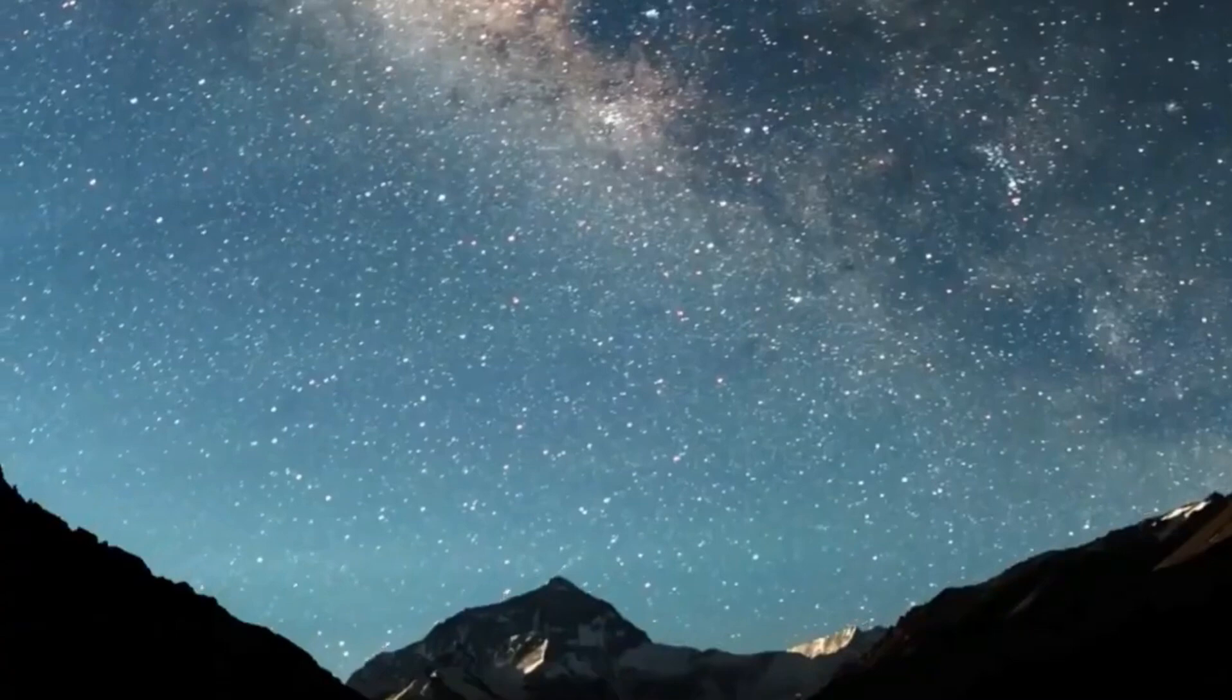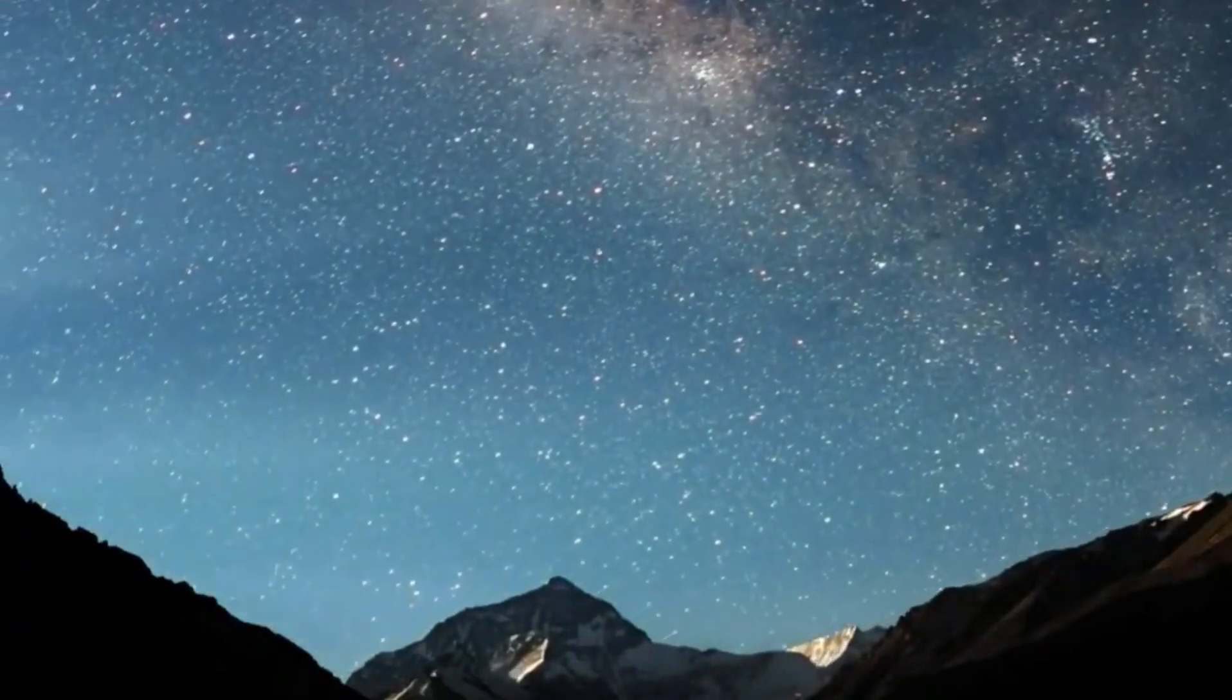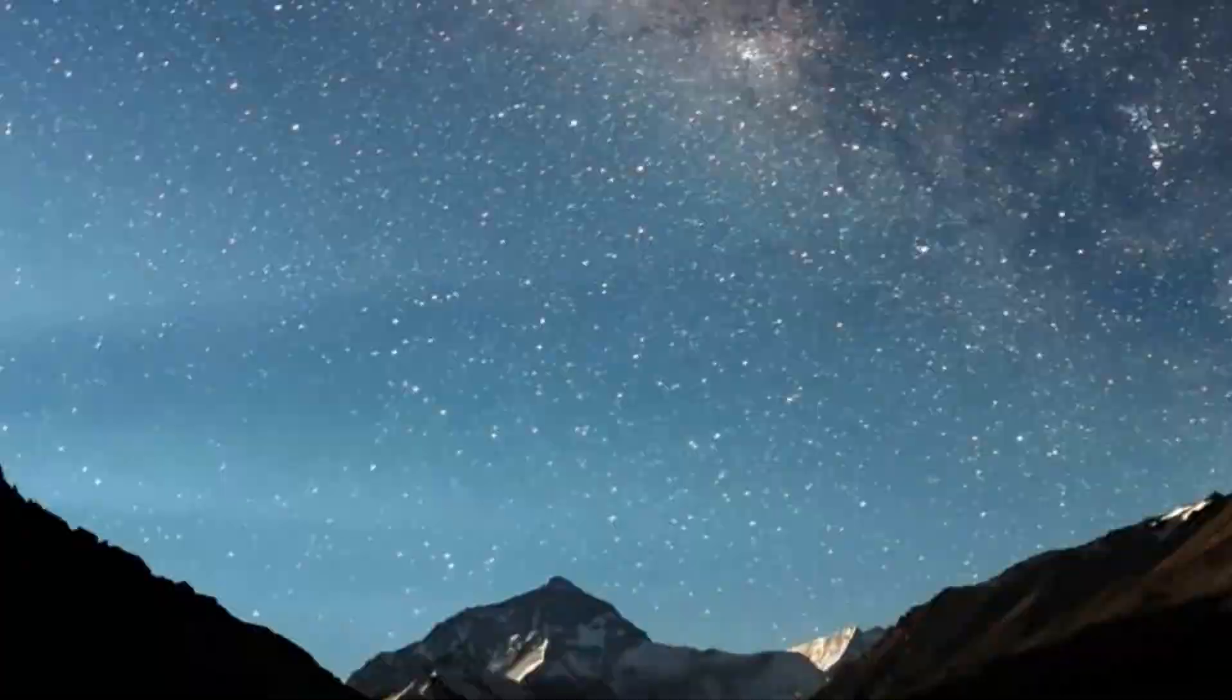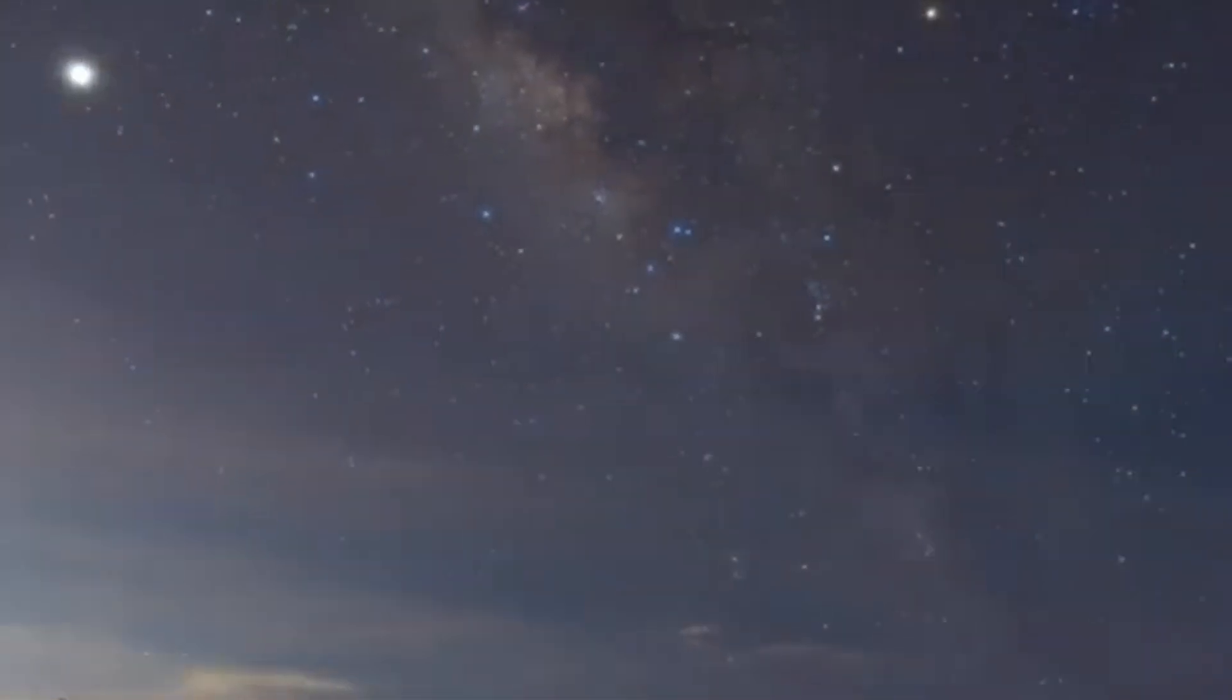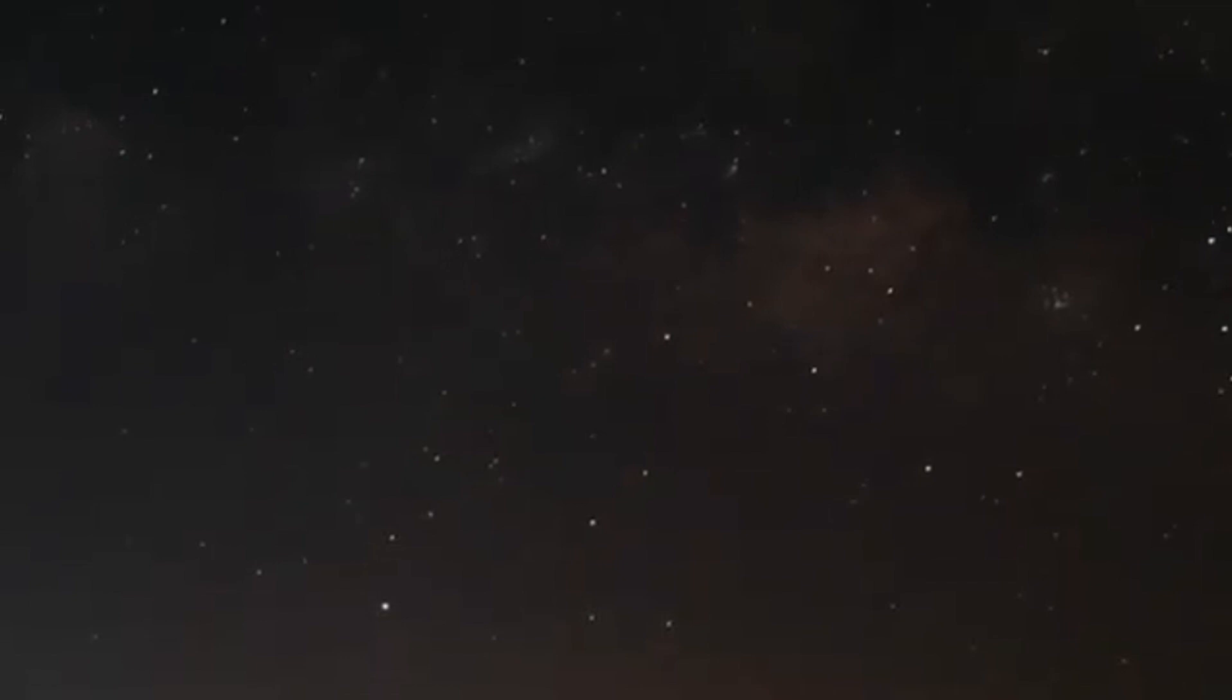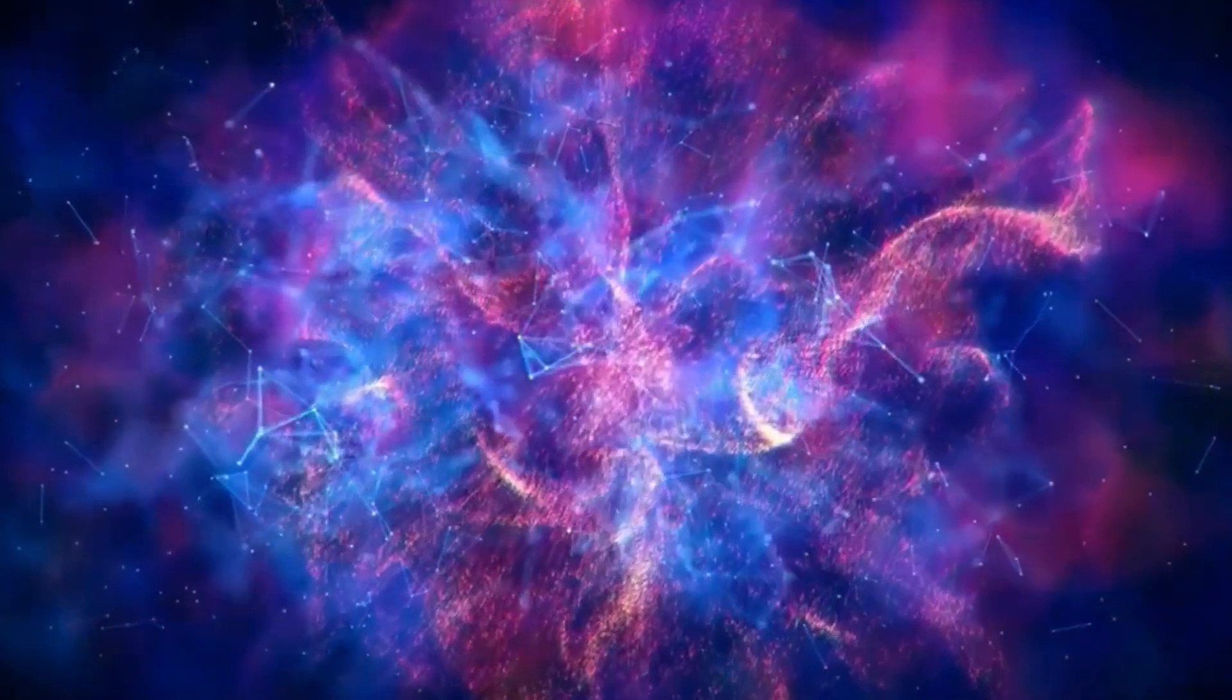Despite orbiting a mere 73 million kilometers from its star, less than 5% of Earth's distance from the Sun, Proxima b defies expectations by not being an Inferno. Proxima Centauri radiates less energy than our Sun. Standing on Proxima b, one would see Proxima Centauri as a dull red orb,